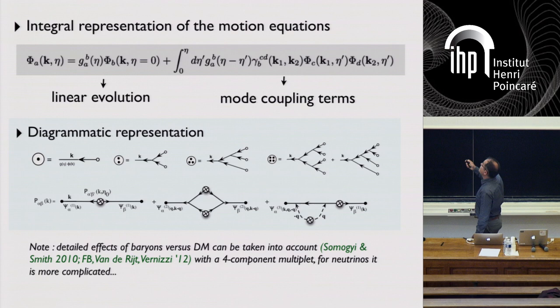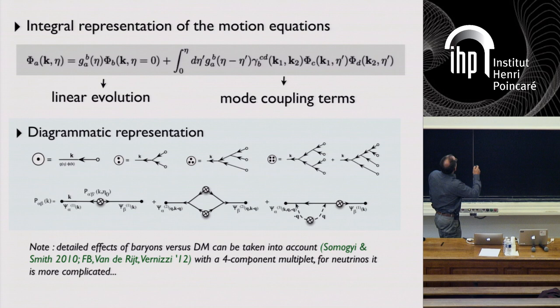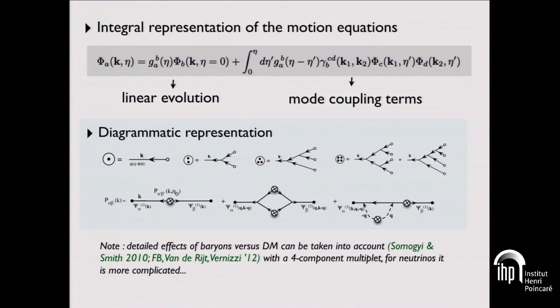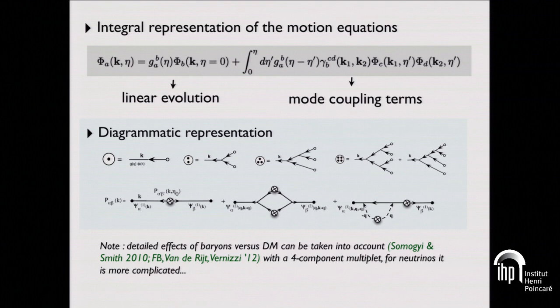If you assume you can expand with respect to initial conditions, you're in good shape to do perturbation theory calculations. One way to rephrase perturbation theory is: we have a linear evolution — a Green's function of the system. In the fluid case this is only time-dependent, with no scale or k-dependence. At higher orders you have more complicated k-dependent kernels, which you can represent diagrammatically, including one-loop expressions of the power spectrum.